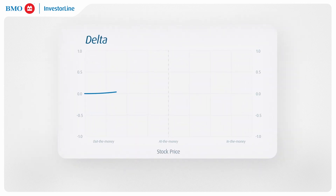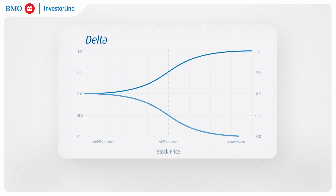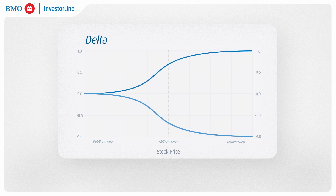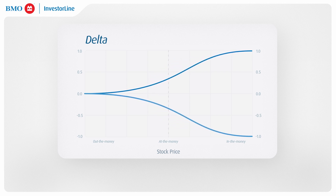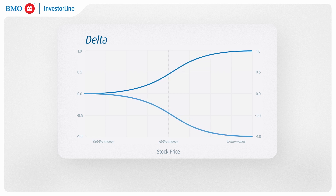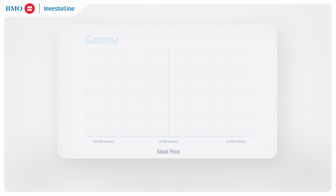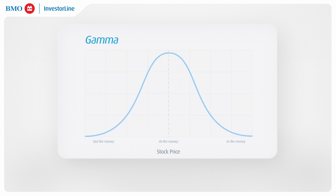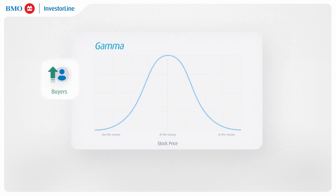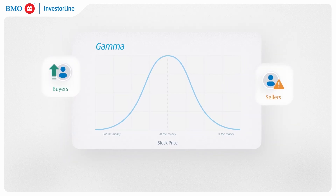As options move deeper into the money, reaching closer to delta values of 1 or minus 1, their exposure to delta changes in a positively convex manner. This convexity is especially desirable for those holding long positions in options, aiming for the contract's value to increase as significantly as possible. A higher gamma therefore suggests a steeper increase in the option's dollar value, benefiting option buyers but posing a risk to sellers.